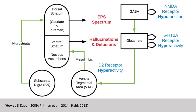GABAergic interneurons synapse onto glutamatergic neurons. Hyperactivity of serotonin-2A or 5-HT-2A receptors results in excessive glutamate release, which stimulates the ventral tegmental area, triggering the release of dopamine.